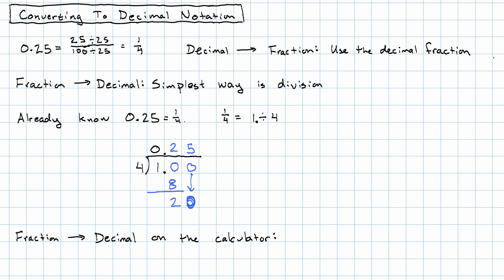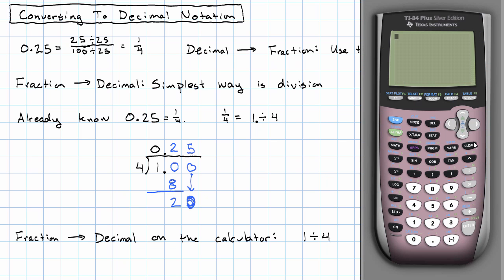To convert a fraction to a decimal on the calculator, we just do the division. And we would say 1 divided by 4 and just hit enter.